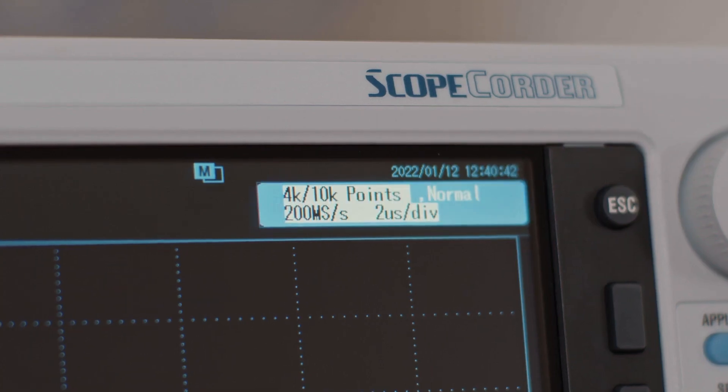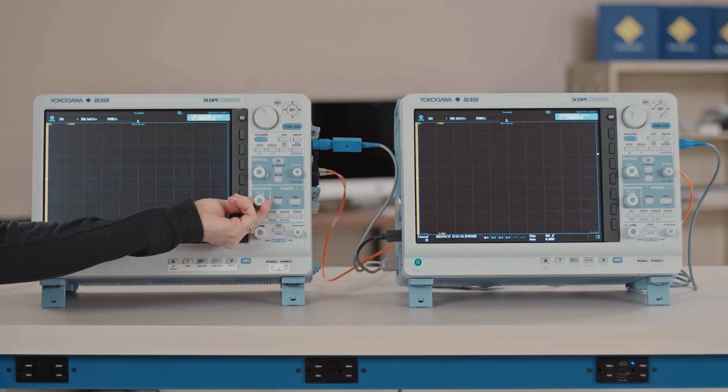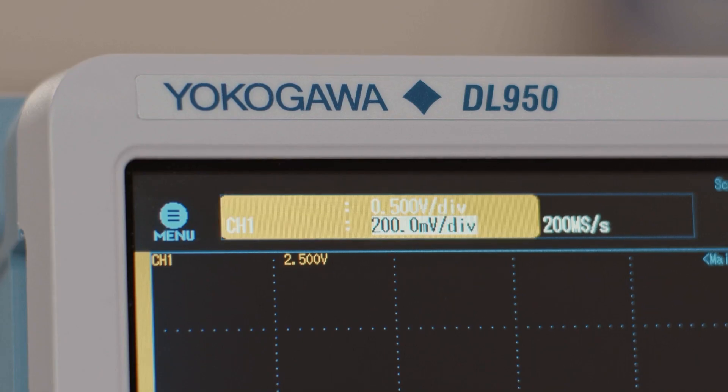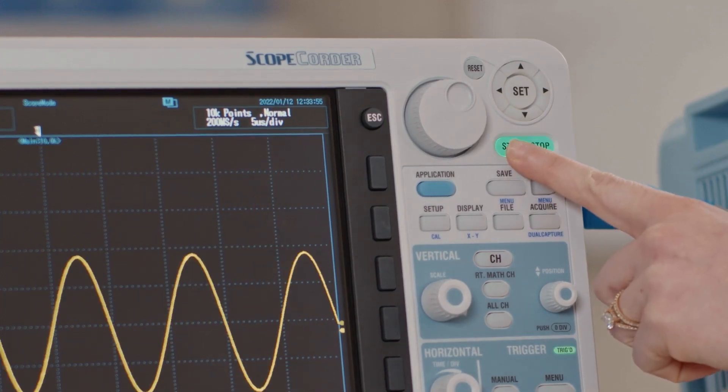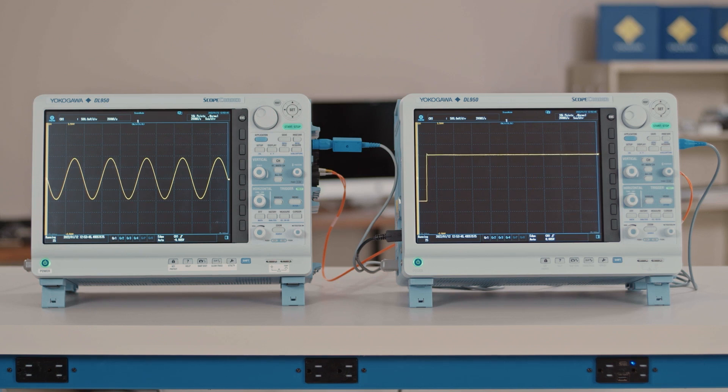All time-based settings on the DL950s are synchronized. Changing the time per division on one, for example, changes the time per division on all of them. Vertical axis settings are set independently. Once the settings are configured, press start on the main unit to begin measurement on all DL950s.